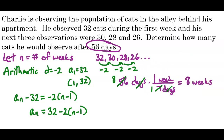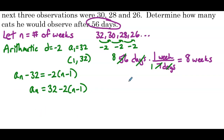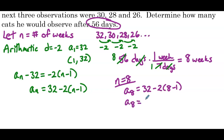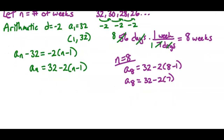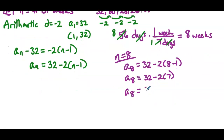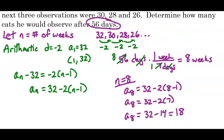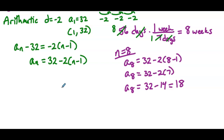So we're going to plug 8 in for n. A sub 8 equals 32 minus 2 times 8 minus 1, so a sub 8 equals 32 minus 2 times 7, which is 32 minus 14, which is 18. The question was how many cats would he observe — the answer is 18 cats on that eighth week.